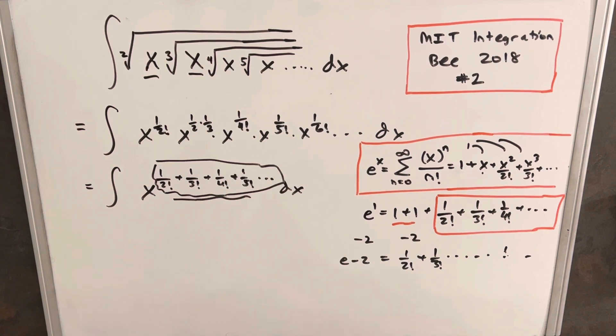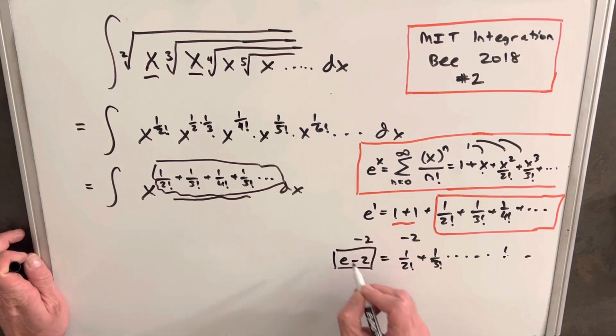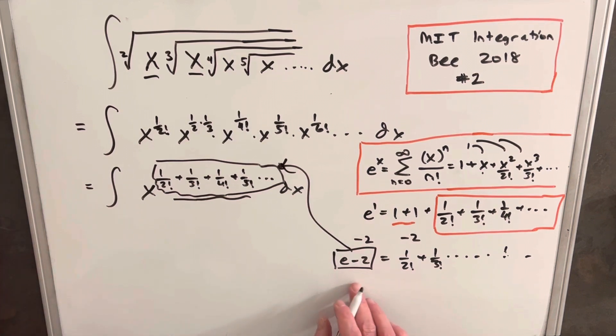So that means what we've done is we've found an expression for our exponent. We found that this whole thing is just e minus 2, which is a number around 0.718. And we can plug that back in and finish off this integral.